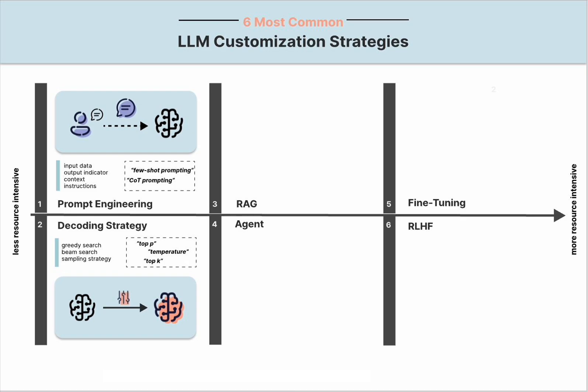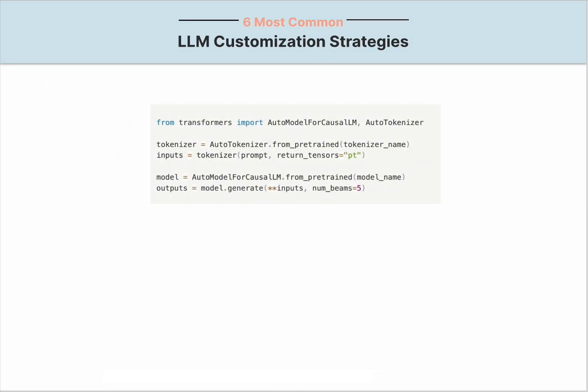During the autoregressive generation process, the LLM outputs one token at a time based on a probability distribution of candidate tokens influenced by the previous token. By default, greedy search is used to produce the next token with the highest probability. On the other hand, beam search decoding looks at multiple possible next-best tokens and picks the combination with the highest combined probabilities across all tokens in the text sequence. The code snippet below uses the Transformers library to set the number of beam paths — for example, num_beams equals five considers five different possibilities during the model generation process.